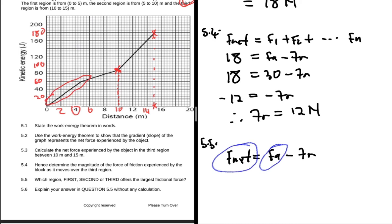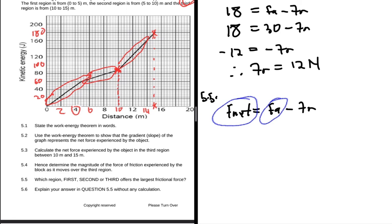So let's look at our graph here. From 0 to 5, it's pretty much steep, but then from 5 to 10 it's a bit gentle. And then 10 to 15 is also very steep. So 5 to 10 is gentle compared to the other parts, so there we have the largest friction. So here we're going to say the second region has the largest friction. And 5.6 says explain your answer in question 5.5 without any calculation. That's basically what we just did. But then another way of doing it, we can actually do the calculations and you're supposed to get a frictional force that is less than that of the region 0 to 5 and the region 10 to 15.